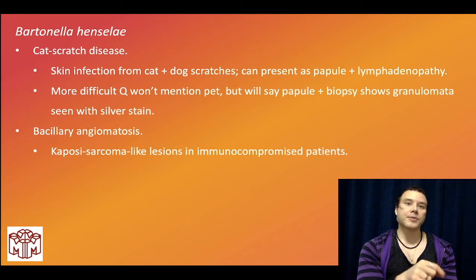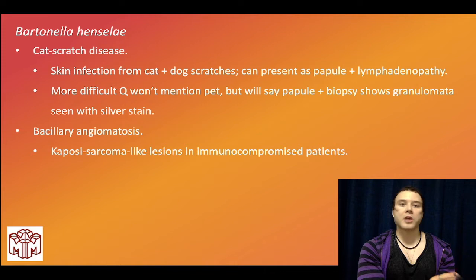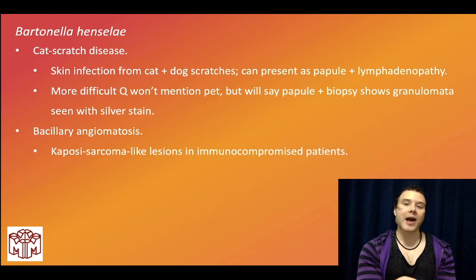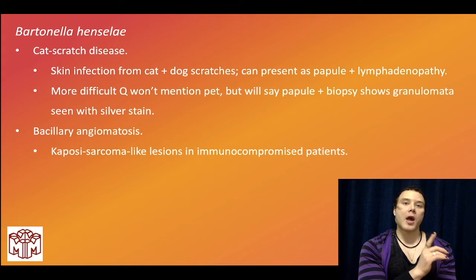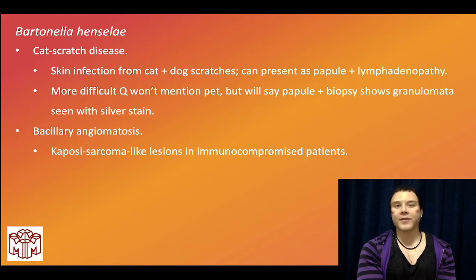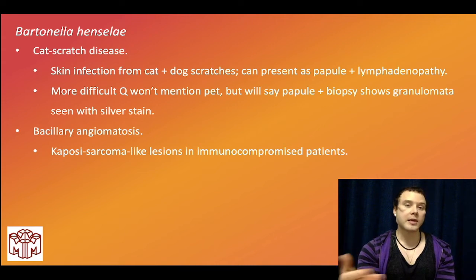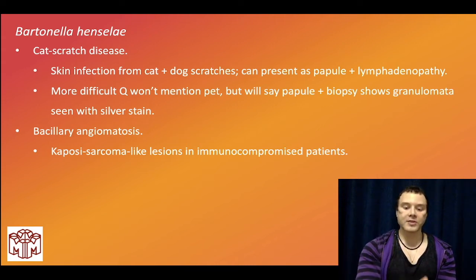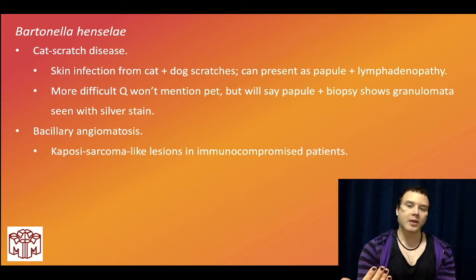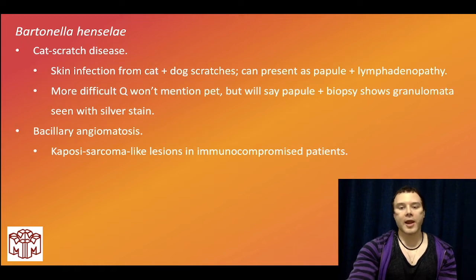Bartonella henselae in immunocompromised patients can cause a Kaposi's sarcoma-like presentation — violaceous nodules on the body — that resembles Kaposi's sarcoma, which is due to HHV-8 (human herpesvirus 8). The question might give you an HIV patient with violaceous skin lesions; you're thinking Kaposi's sarcoma, but if all the answers are bacteria, it's Bartonella henselae — that's bacillary angiomatosis.